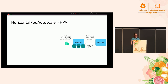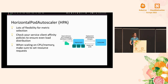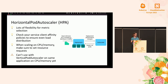Finally, my favorite: the horizontal pod autoscaler. This provides so much flexibility for metric selection — every application is its own special snowflake, so you can give it its own corresponding metric. You'll want to check your service client affinity policies to ensure even load distribution. You don't want to scale from two replicas to 100 only to discover the first two are still getting all the traffic. Also, you need to set resource requests when scaling on CPU and memory, since HPA looks at the percentage of your request that you're utilizing. These two autoscalers can't be used in conjunction for the same workload on the same metric yet, but contributors are working on it.